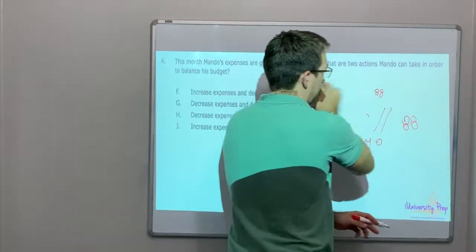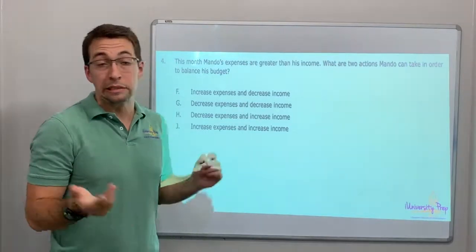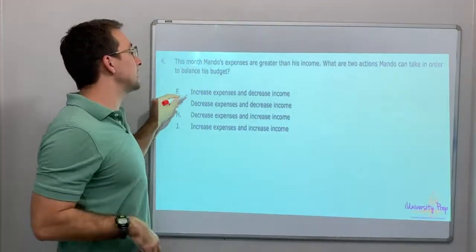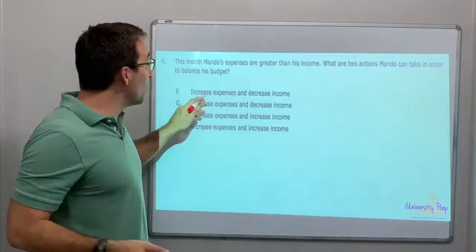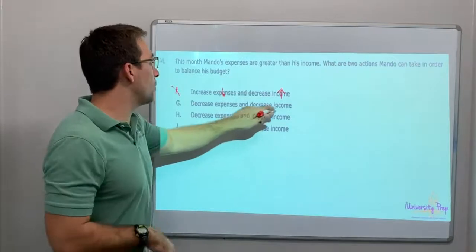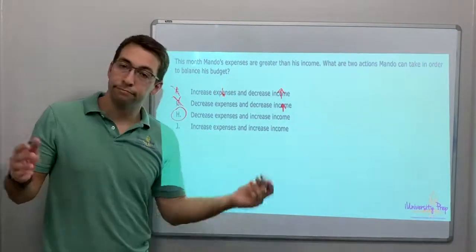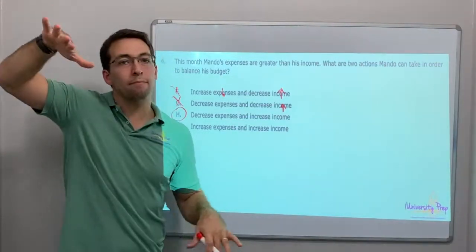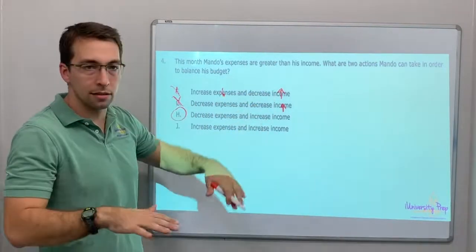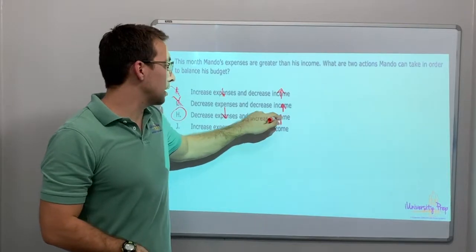Last question. This month, Manlo's expenses are greater than his income. What are two actions Manlo can do to balance his budget? Increase expenses and decrease income? That's not good. You want expenses to go down and income to go up. Decrease expenses and decrease income? No, income needs to go up. Decrease expenses and increase income – that's what he can do. You've got to have the opposite. It's like a seesaw: when one goes up, the other goes down. You don't want everything to go up because you're out of balance. You've got to decrease expenses and increase income. Answer is H.